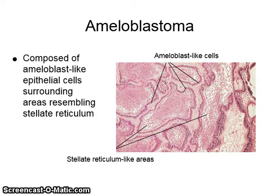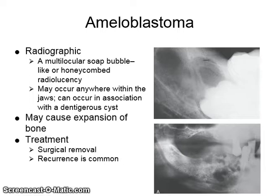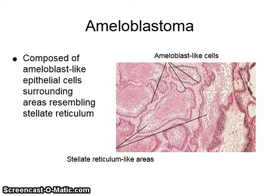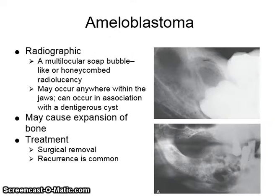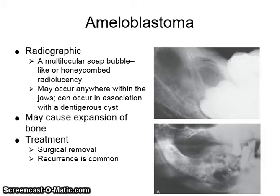Ameloblastoma is composed of ameloblast-like epithelial cells surrounding areas resembling stellate reticulum. Radiographically, it shows as a multilocular soap bubble-like or honeycombed radiolucency. It may occur anywhere in the jaws, can occur in association with a dentigerous cyst, and may cause expansion of bone. Treatment is with surgical removal, and recurrence is common.